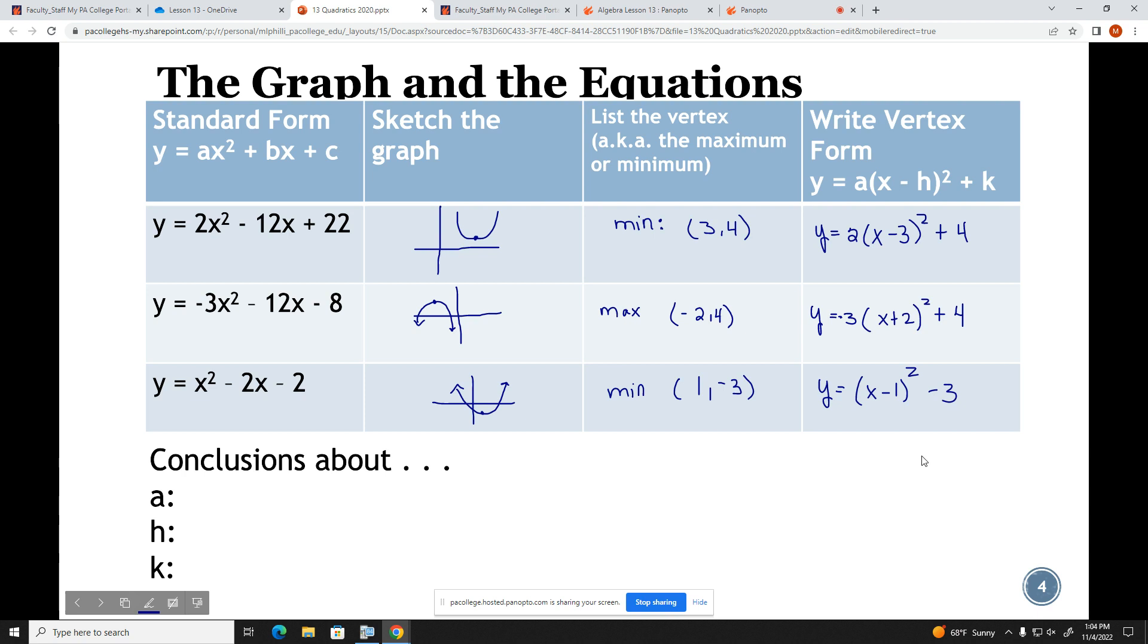We want to then make conclusions about the formatting. So the first conclusion that I want to reach is that I notice the a, which is the first number in each of these standard formulas, is the exact same number. In the last formula, the a is an unwritten 1 in both formulas. And so all throughout, the a is the same in both versions of the formula.